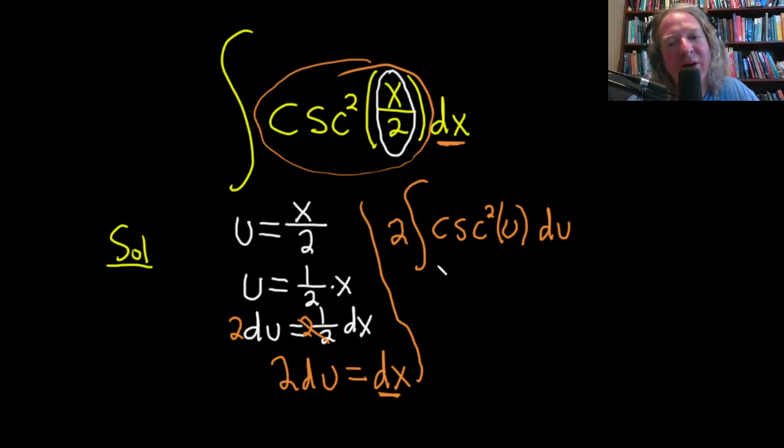Well, you can't pull variables out that you're integrating with respect to. So if you have a dx here, you can't pull out an x. You have a du here, you can't pull out a u. Constants you can pull out.